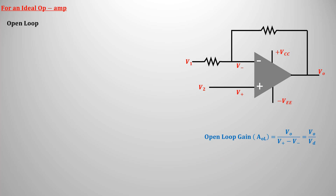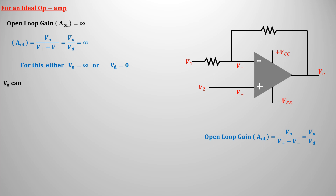The open-loop voltage gain of an ideal operational amplifier is infinite. Open-loop voltage gain may be infinite if either the output voltage is infinite or the difference voltage of the operational amplifier is zero. The output voltage of an operational amplifier cannot be infinite because of its +Vcc and -Vee terminals. Both these terminals are installed so that the operational amplifier can work only within this voltage range, and the output voltage can never exceed +Vcc or -Vee values.